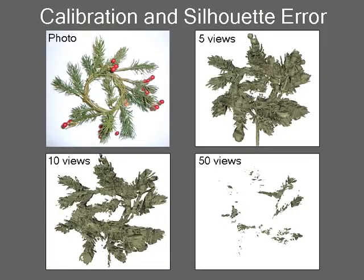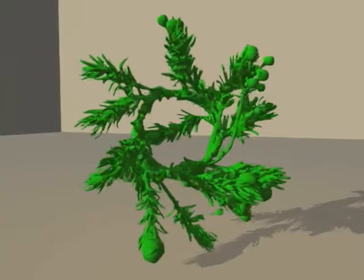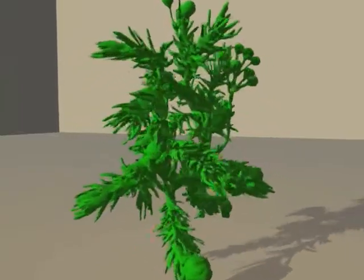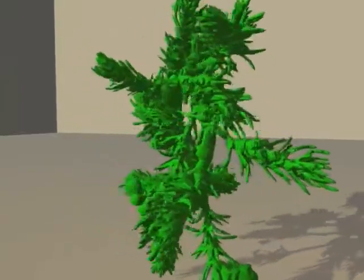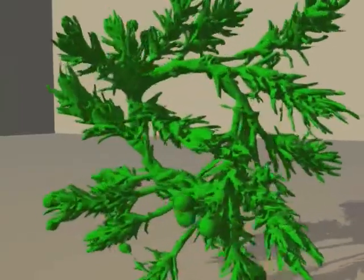Here we demonstrate the sensitivity of visual hull estimation in the presence of errors in light source positions and silhouette contours. As shown, the estimation worsens significantly for a large number of views. We now show a rendering of this model using Maya. Notice the sharp shadows of the small branches.